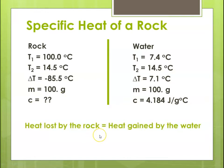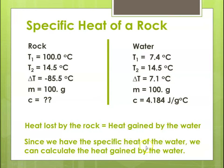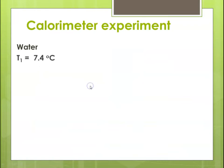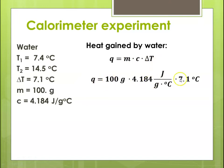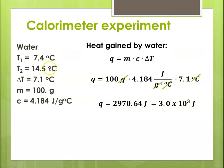Heat lost by the rock equals heat gained by the water. Since we know the specific heat of water, we can calculate the energy gained by the water first. Using Q equals MC delta T, I plug in 100 grams, 4.184, and delta T of 7.1. Canceling out grams and degrees C, Q equals 2970.64 joules. Rounding to two significant figures, Q is 3.0 times 10 to the 3, roughly 3,000 joules. The heat gained by the water is 3,000 joules.